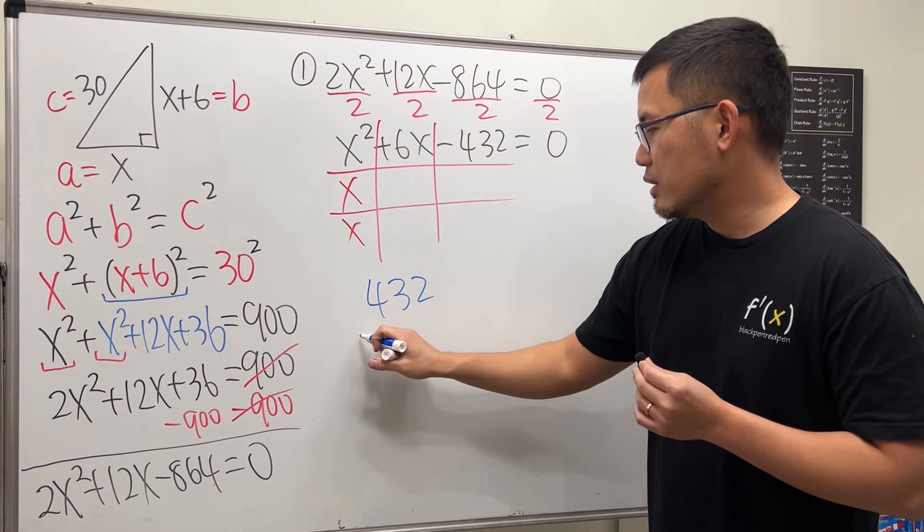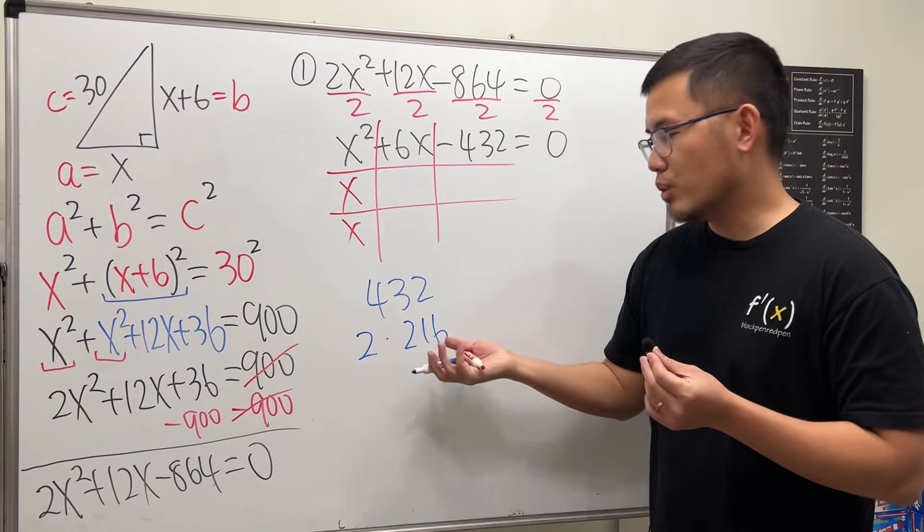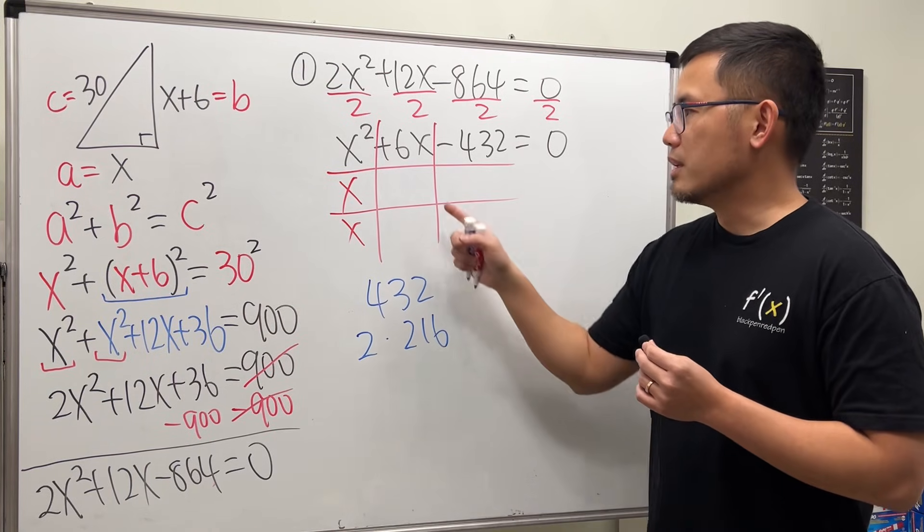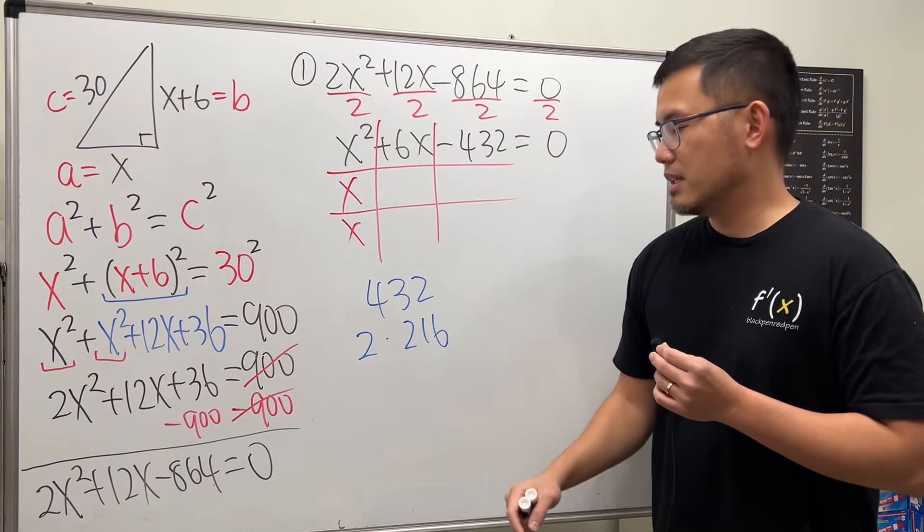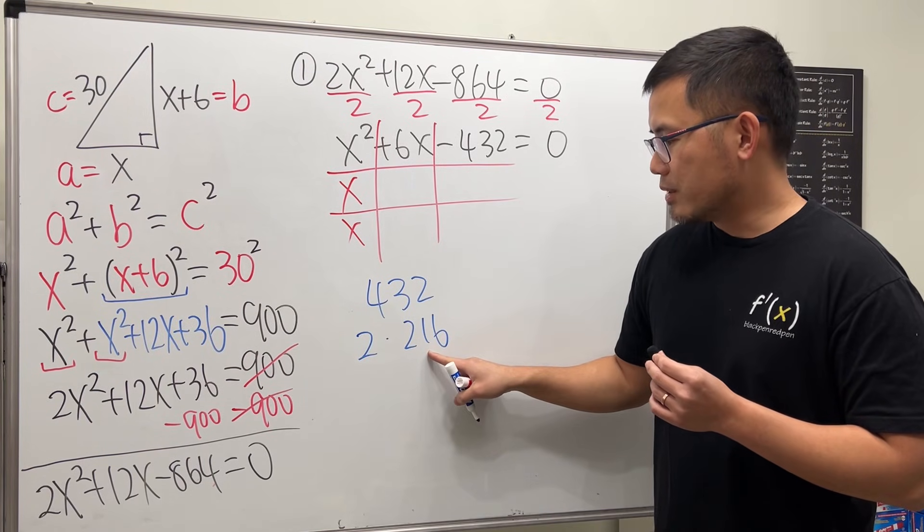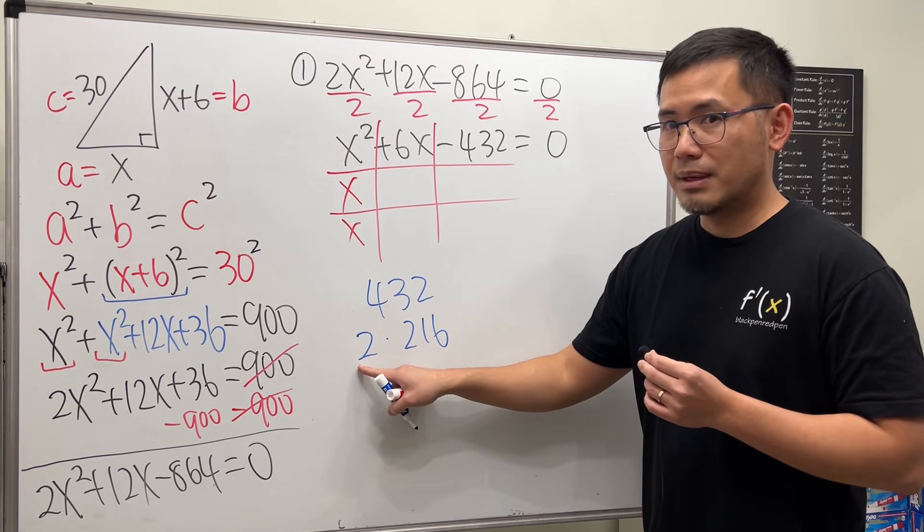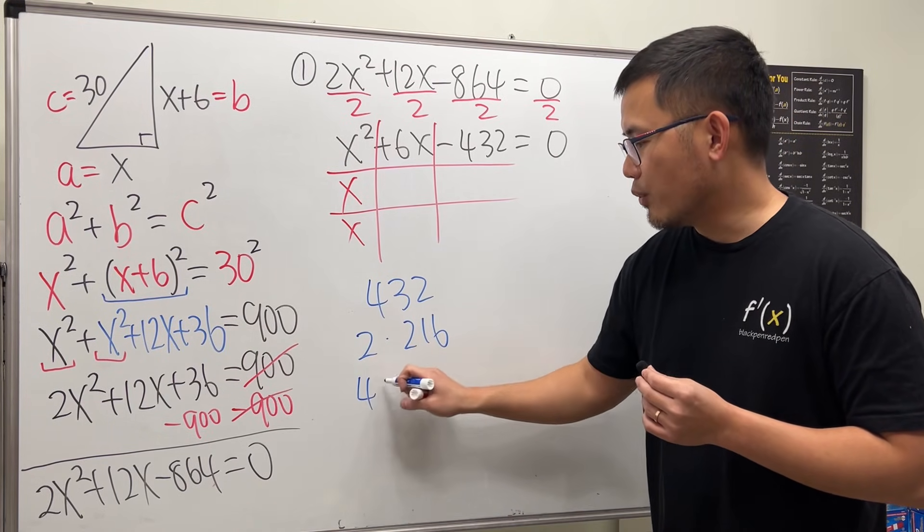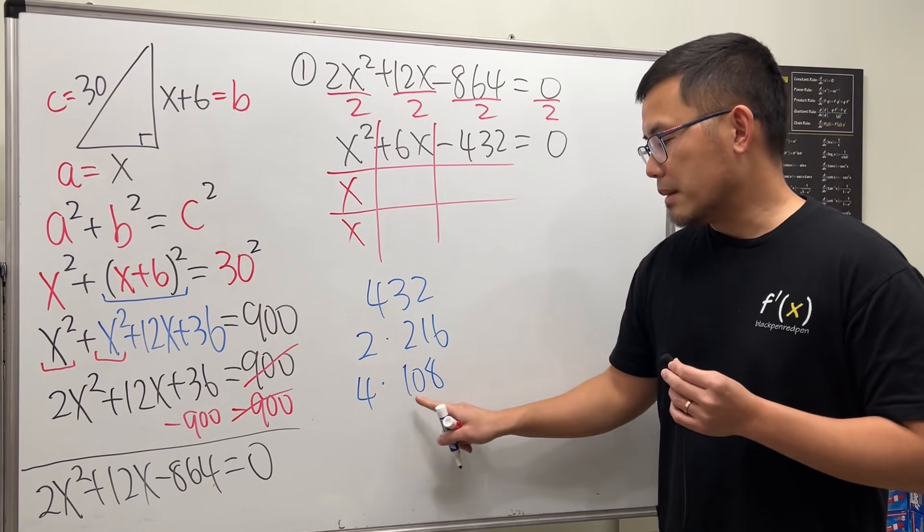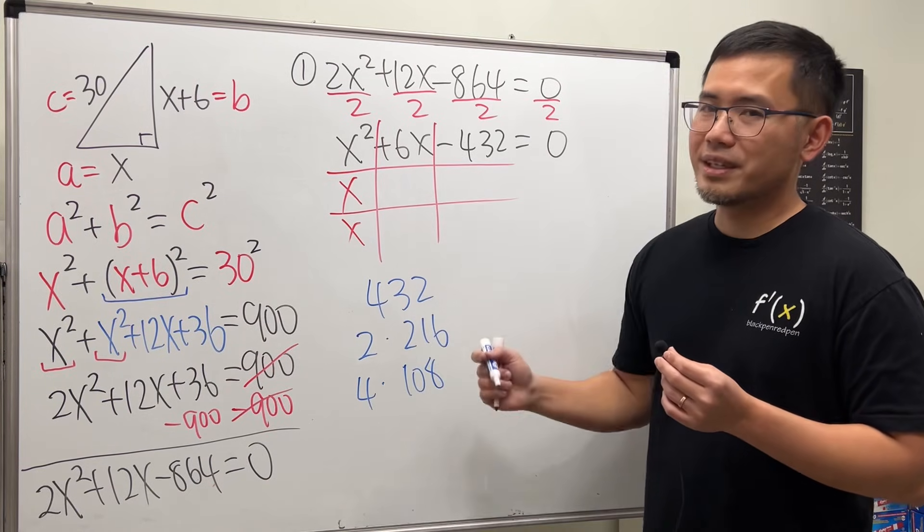Firstly, we can say 2 times 216 equals that. Okay, but the difference between this and that is too big, because right here, we are trying to get to 6. So, you can just try it, right? For example, what you can do is, you can look at this number. You can divide this by 2. That means you multiply this by 2. So, you can get 4 times. Divide this by 2, you get 108. So, 4 times 108 is still that. Good. But the difference is still too big.